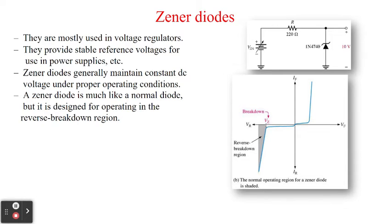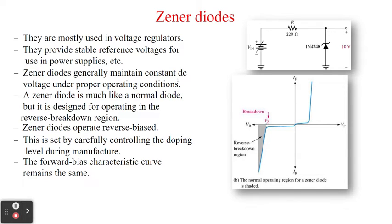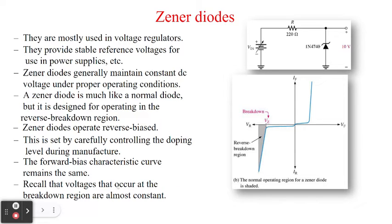If there's too much voltage input, or the load resistor and the series R is wrong, then the Zener diode will be damaged. A Zener diode is much like a normal diode, but it is designed for operation in the reverse breakdown region. The Zener diode is set by carefully controlling the doping level during manufacture. The characteristic curve of a Zener diode in forward bias remains the same as the normal rectifier diode. Voltages that occur at the breakdown region are almost constant — not perfectly constant, but when rounded off, approximately constant.